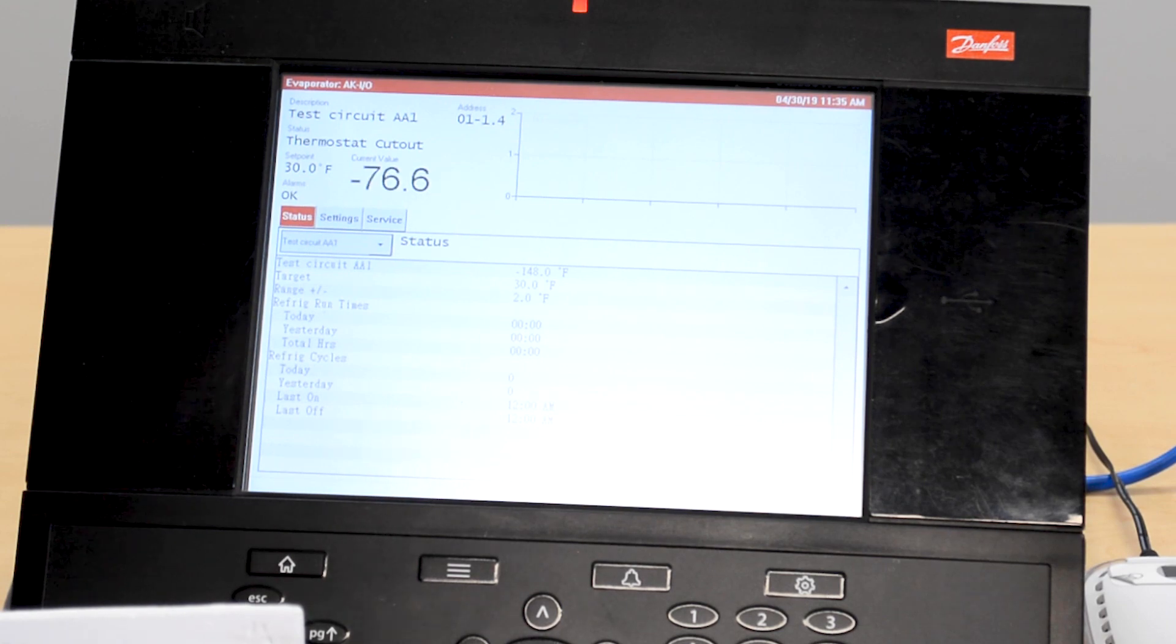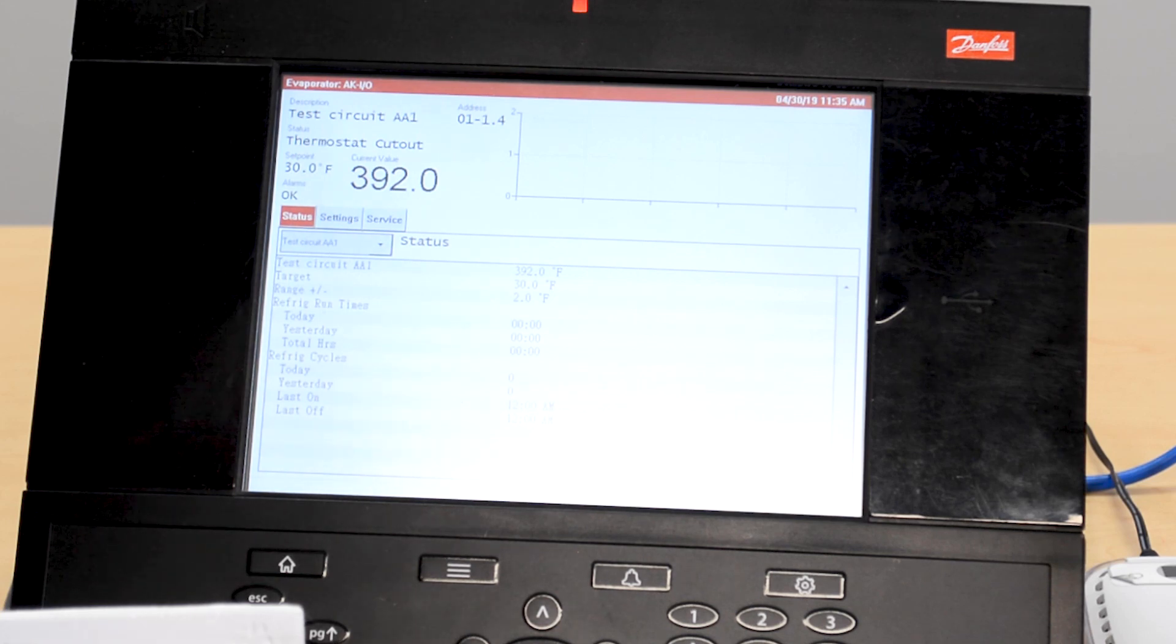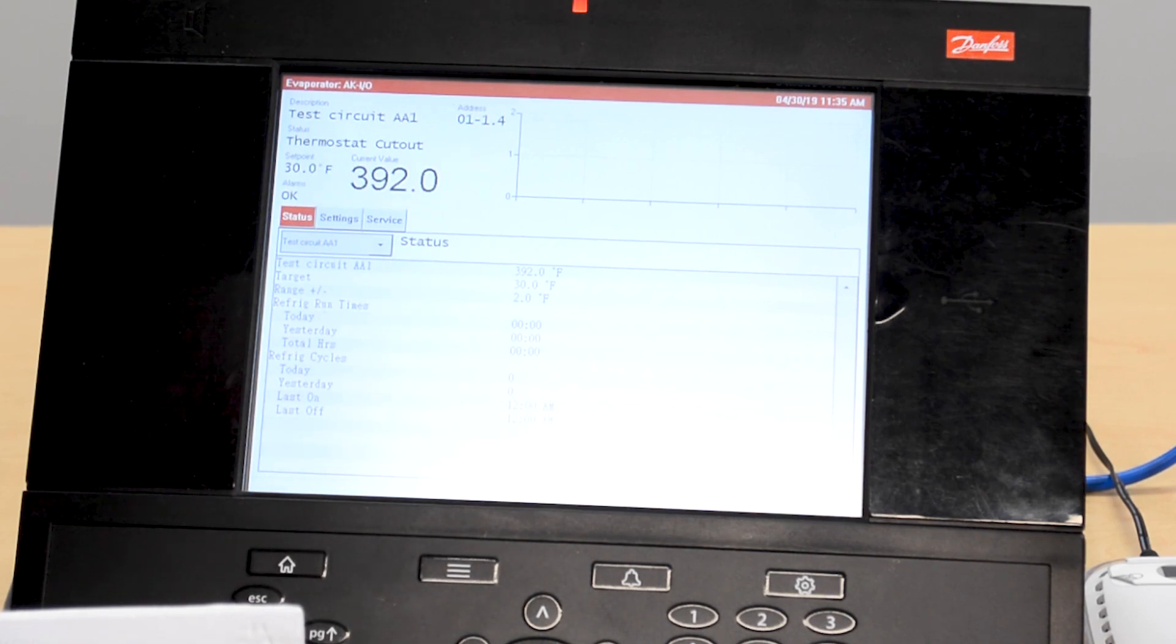The other condition, other than the normal, will be an open. I remove one of the leads and we're going to see that it is going to 392. So our outside extremes plus our normal condition are typically what we need to be dealing with.